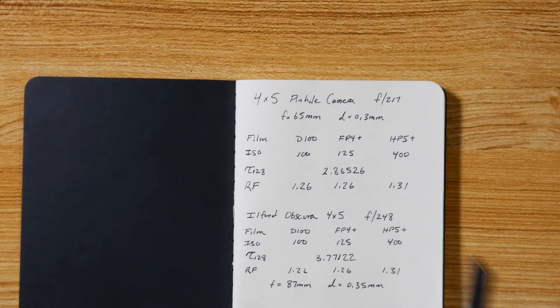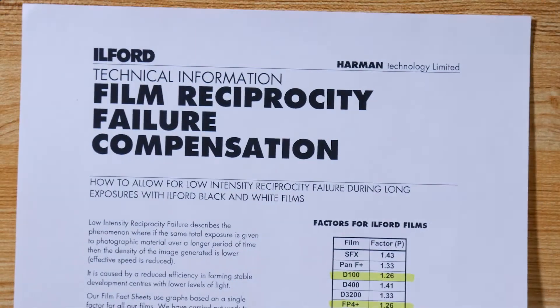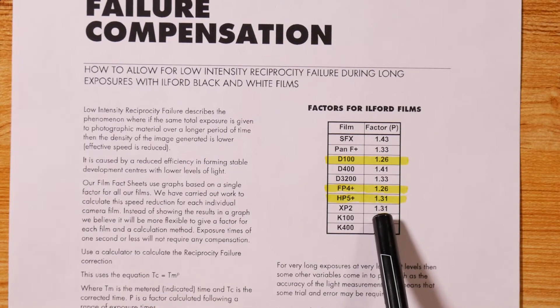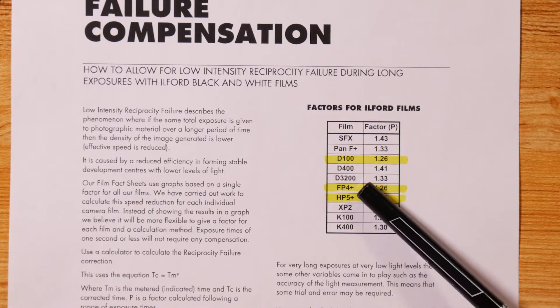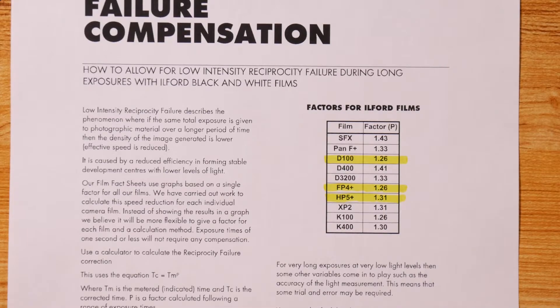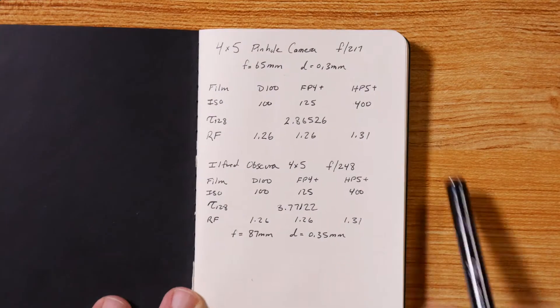Where do I get these numbers? Well, Ilford was nice enough to publish some stuff online. Again, you should do your own testing, but this is the technical information sheet for film reciprocity failure compensation. So I have my films Delta 100, FP4, and HP5, so I take these numbers and copy them down in my book so I don't have to keep carrying this whole big sheet around.